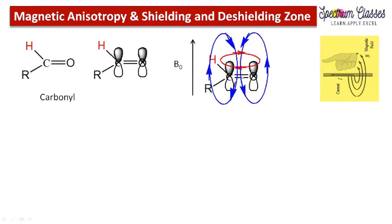Inside this ring the induced magnetic field lines are in the downward direction, and outside they are in the upward direction. The applied external magnetic field B0 is also in the upward direction. So this induced magnetic field increases the strength of the magnetic field experienced by the proton outside the ring — this is an additive effect. The proton experiences more magnetic field, so it resonates at a higher frequency, that is, a higher chemical shift value. This region is known as the deshielding zone.